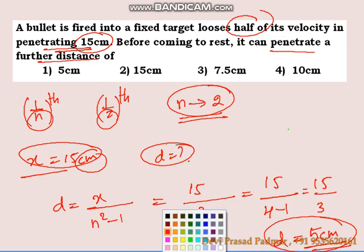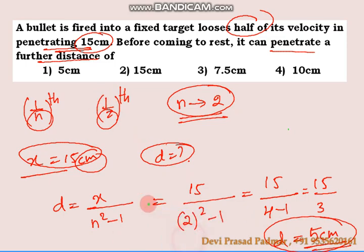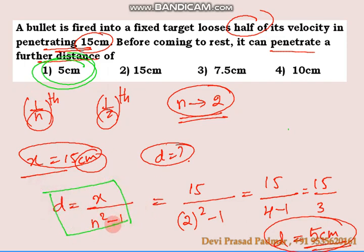The answer is option one — 5 centimeters. If you know this shortcut formula, you can directly solve this problem; otherwise you would need to calculate the velocity step by step. This is the easier method.